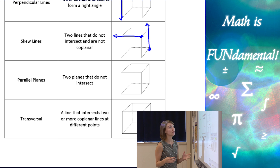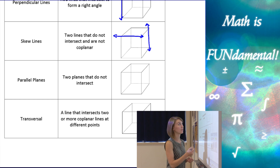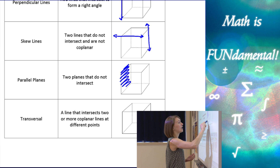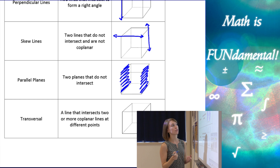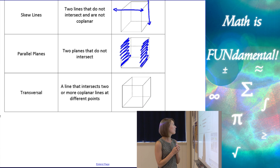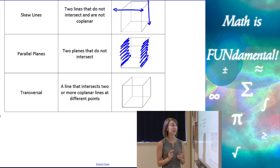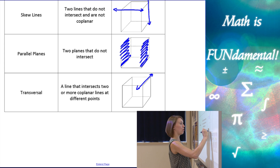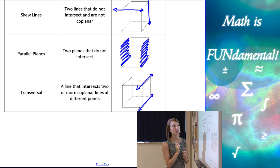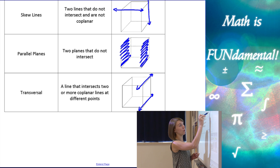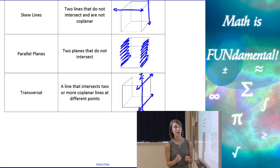Parallel planes are two planes that don't intersect. Here I have a few different pairs of parallel planes, and to show which ones, we can just shade them in. So let's do this side plane here and this side plane here — those are going to be two parallel planes. Last definition for the first table: a transversal is a line that intersects two or more coplanar lines at different points. If I have two coplanar lines here and here, my transversal is going to be a line that intersects both of those at two different points. This line here would be my transversal — I'll just mark it with a T.